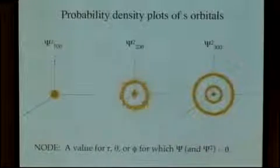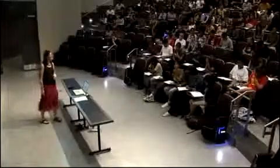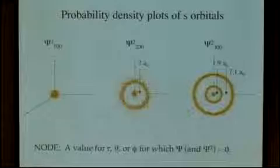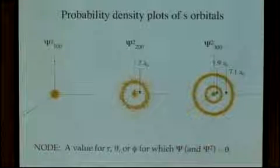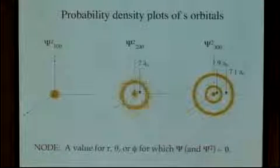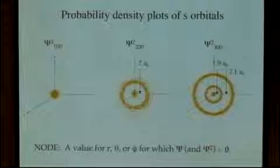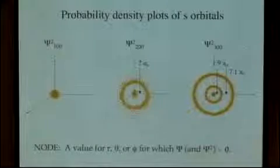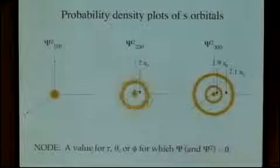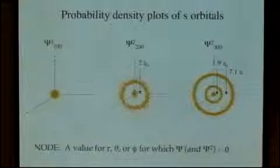How many nodes do we have in the 3s orbital? Two. So we have two nodes in the 3s orbital. We can actually specify where those nodes are. For the 2s orbital, it's at 2a₀ — two times the constant a₀, which is the Bohr radius. And for the 3s, we have one at 1.9a₀ and one at 7.1a₀.